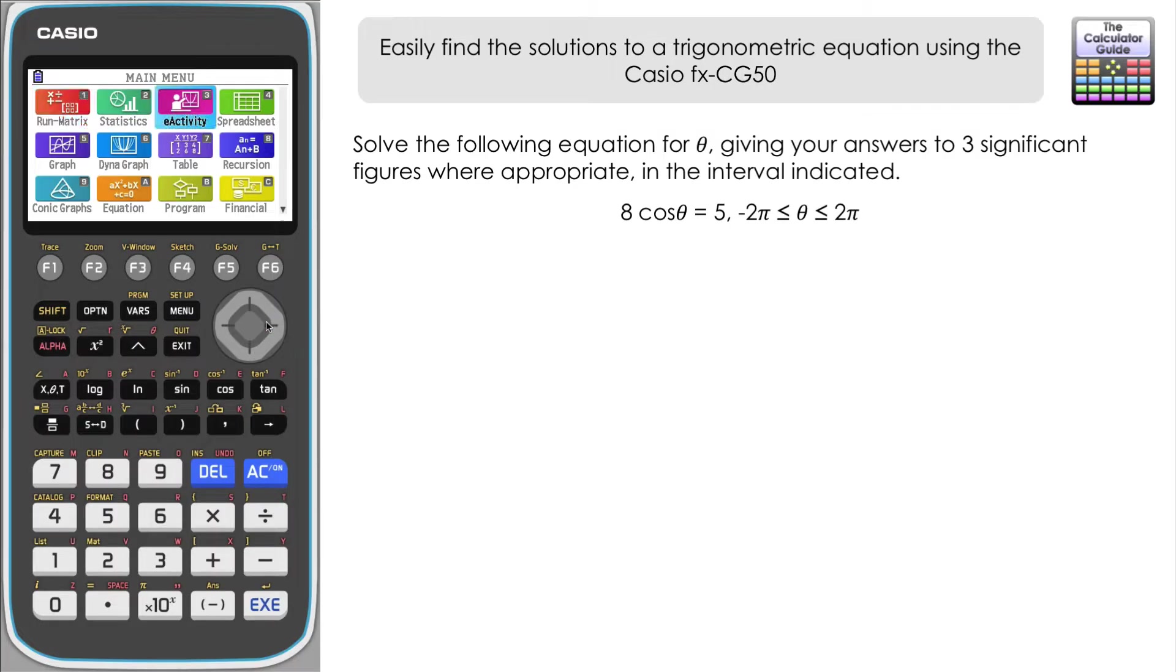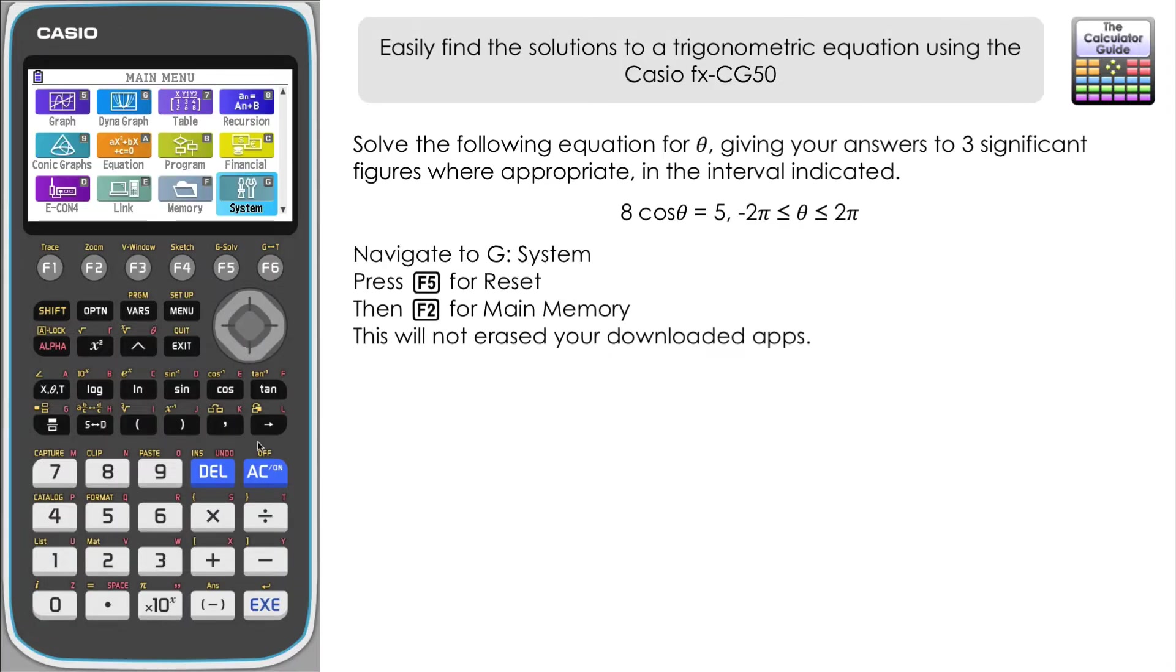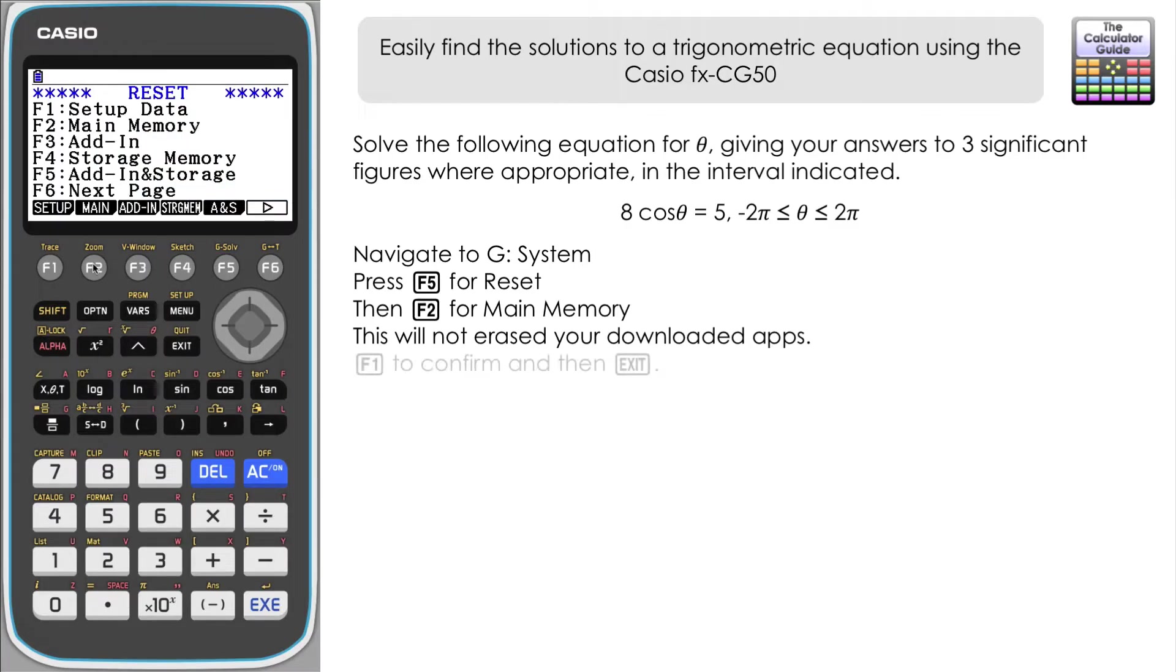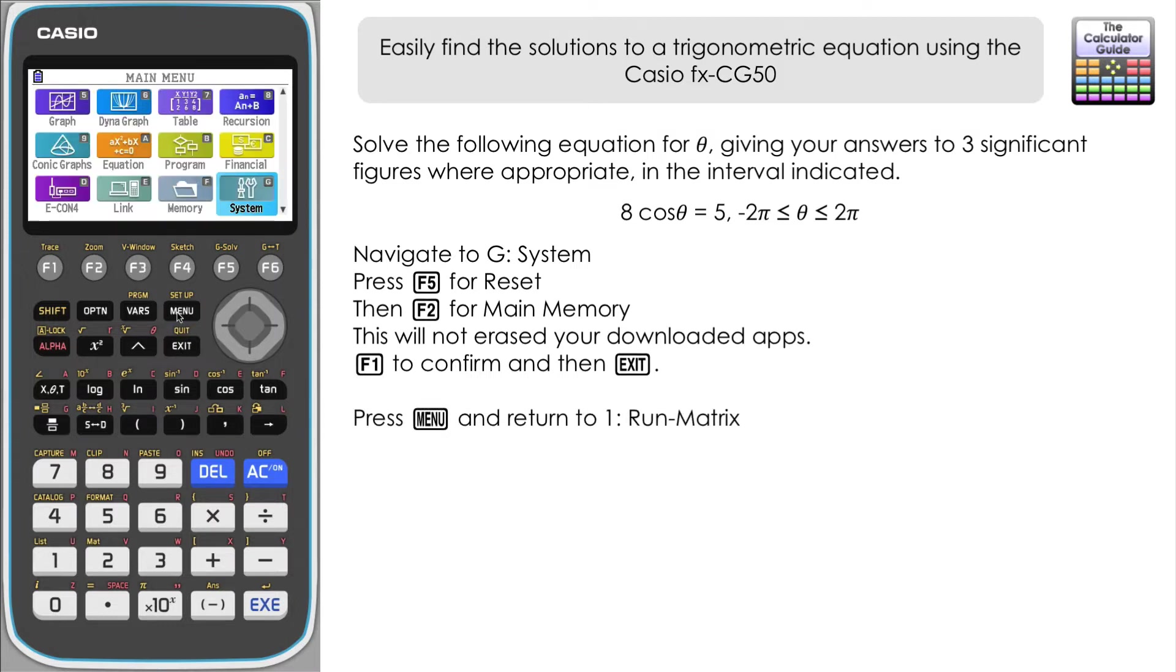Let's go down to System and then F5 for Reset, and we're going to choose F2 for Main Memory and that's just going to clear that out for us. F1 to confirm and then Exit to come out of that. So let's press Menu and go back to Run-Matrix where we're going to do our solving.